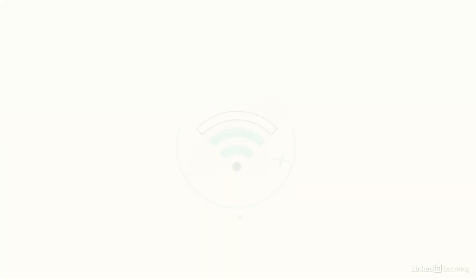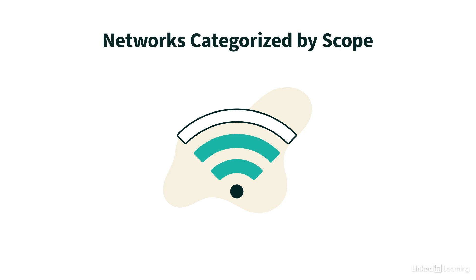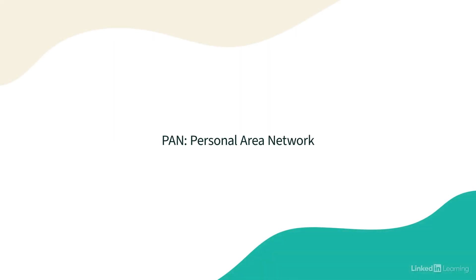Another way that we can categorize networks is by their scope — meaning what area do they cover. A personal area network, or a PAN, is a very small network that interconnects two devices. For example, if you have a gaming system with a wireless controller, maybe using Bluetooth, that connection between your controller and your gaming console constitutes a PAN.